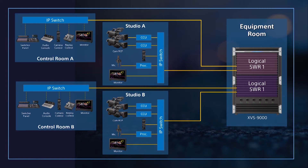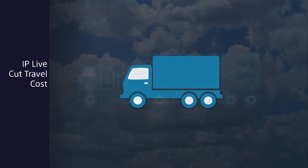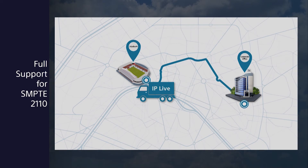IP Live enables resource sharing, where a single switcher frame can support multiple shows simultaneously. IP Live enables remote integration, dramatically cutting travel costs. And ultimately, IP Live will enable virtualization — a world in the not-too-distant future where you can subscribe to production resources as you need them.